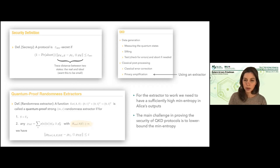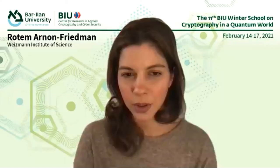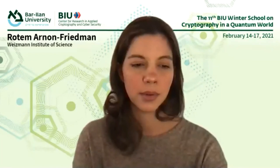This is the end of this part. If you have some questions, I can answer. There is one question: why are we not considering Bob's state as well? How are we making sure that Alice and Bob have the same key at the end of this process?